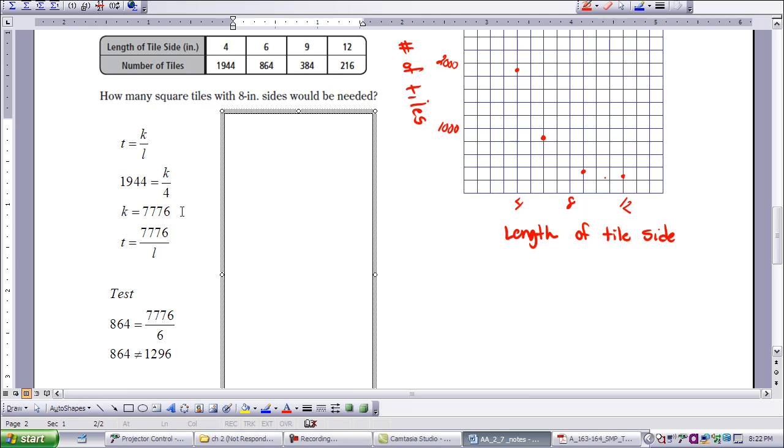So now I make my specific equation using that value for k, and I get T equals 7,776 over L. So I now need to test to see if that model works. So I'm going to take another data point. I'm going to take 6 and 864 and plug that into my equation. 6 in place of L and 864 in place of T. And when I divide 7,776 by 6, I get 1,296. That is not equal to 864. So now I need to proceed with my next option.